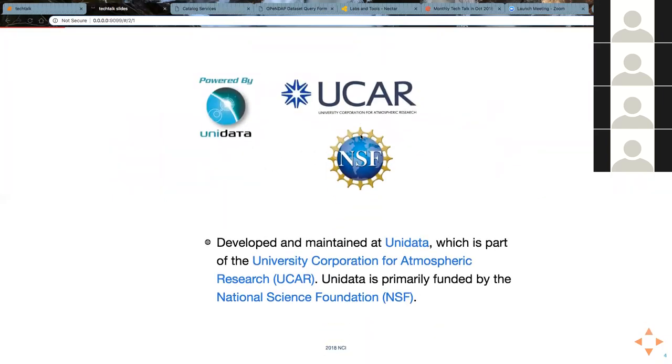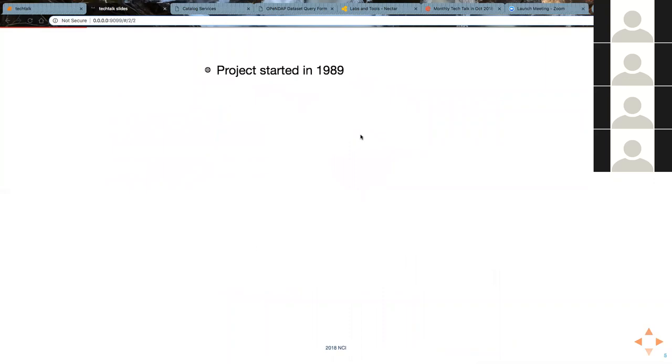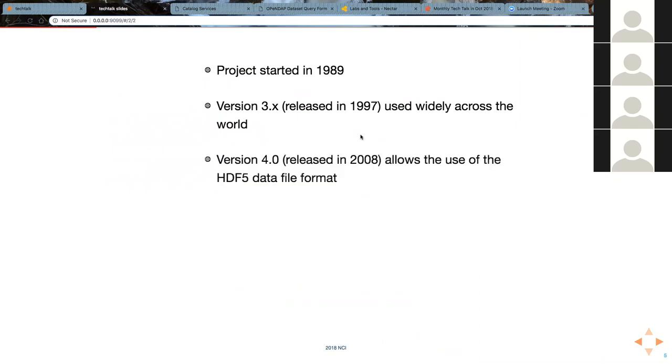It was developed and maintained by Unidata, which is part of UCAR, the University Corporation for Atmospheric Research, which is a conglomerate of 120 or so universities in the States and it's funded by the National Science Foundation. The project started in 1989. Version 3, which was released in 1997, is used widely. Version 4, which was released in 2008, allows the use of the HDF5 data file format.